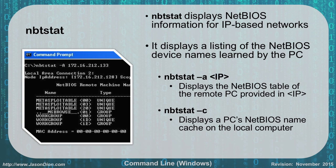NBTSTAT displays your NetBIOS information for IP-based networks. NetBIOS is used by Windows for local file sharing and local printer sharing, and it displays a list of NetBIOS device names learned by the PC. Running nbtstat -a followed by an IP address returns the name of that PC — in this example the PC was called Metasploitable, in a workgroup called Workgroup rather than a domain. Running nbtstat -c shows the cache on the local computer of everything it knows. Every 13 minutes NetBIOS broadcasts its information, so after 13 minutes on the network, nbtstat -c will show every Windows machine on the same subnet. With -a, you manually query a specific IP to find out what computer it is.